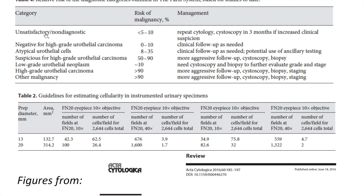These tables go into the relative risk of the diagnostic categories as outlined in the Paris system. For unsatisfactory specimens, the risk of malignancy is less than 5–10%. Negative for high-grade is 0–10%. Atypical urothelial cells (AUC), with N-to-C ratio greater than 0.5, has about an 8–35% risk of malignancy. Suspicious for high-grade carries 50–90%. Low-grade urothelial neoplasm is around 10%. And positive for high-grade urothelial carcinoma or other malignancy has greater than 90% chance of malignancy.